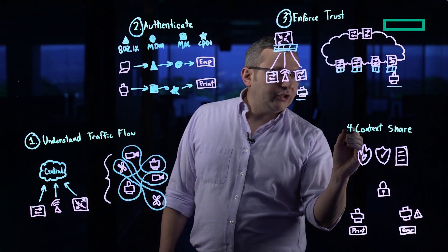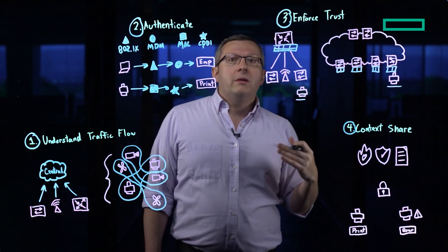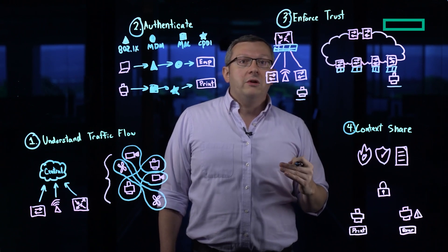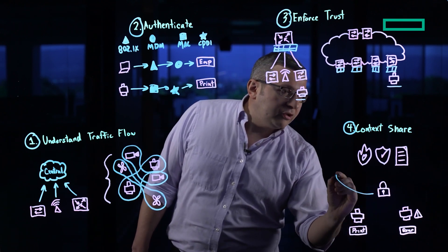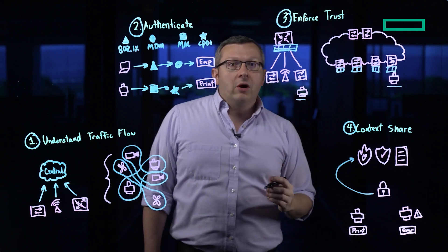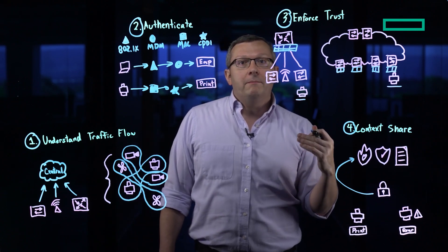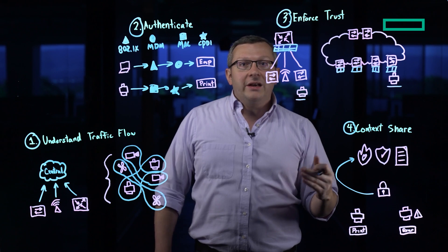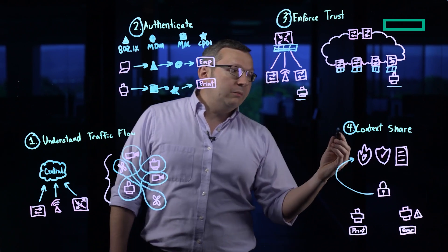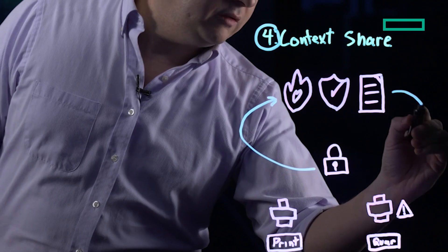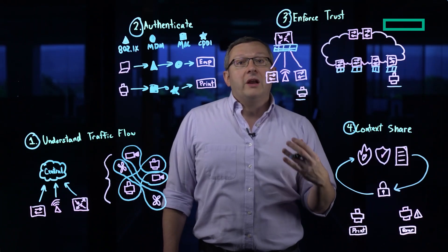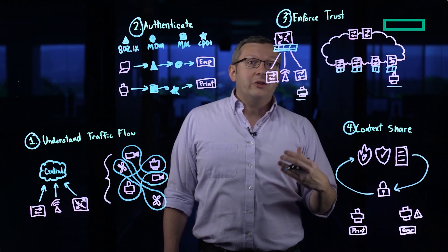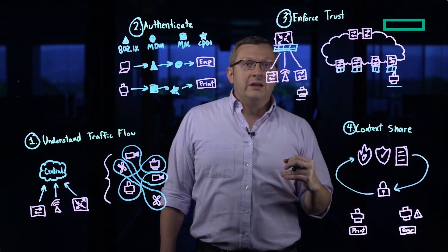Finally, we have context sharing. Context sharing is all about ensuring you use the most data available to ensure that you've got the security you want on those endpoints. What we do is share information from ClearPass to our security partners. By doing that, our security partners have a better idea of the identity and endpoint types that are on the network to provide better security information. Ultimately, our partners share information back into ClearPass so that ClearPass can make better decisions about the identity and current state of that identity on the network.